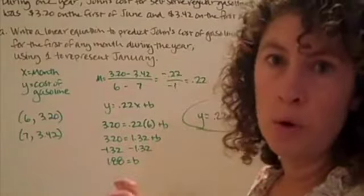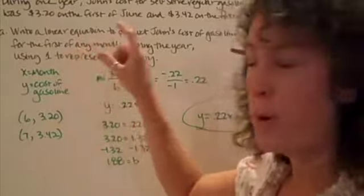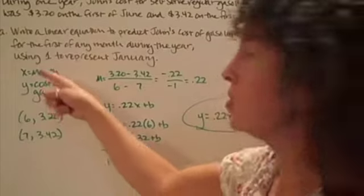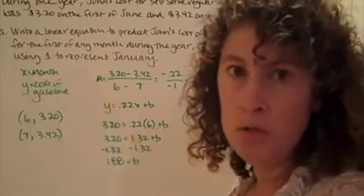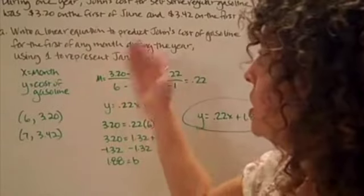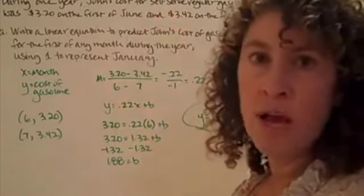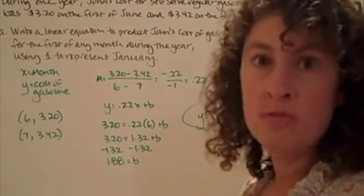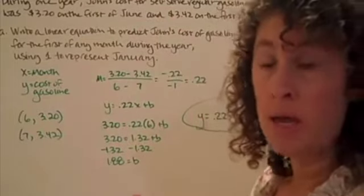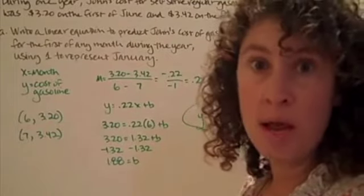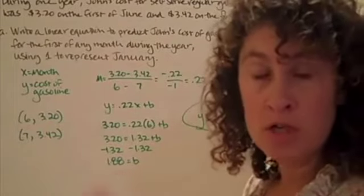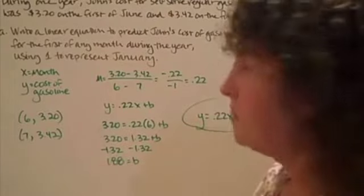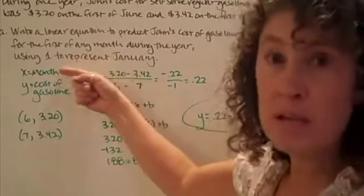The first thing I want to do when I have a word problem is define my variables. In this situation we're talking about the change of gasoline over time. Right there I know that the change of gasoline is my y and the time in months is my x because our rate is change of y over change of x. Change of gasoline over months.